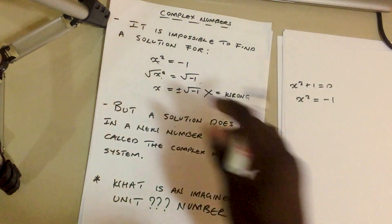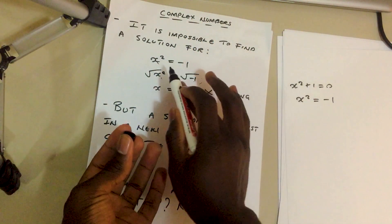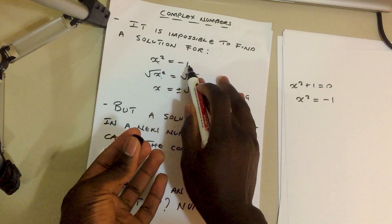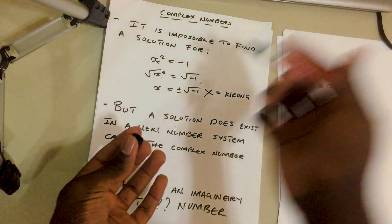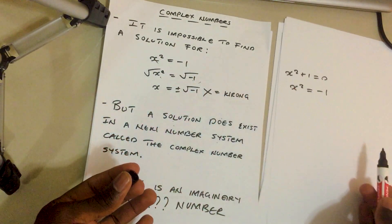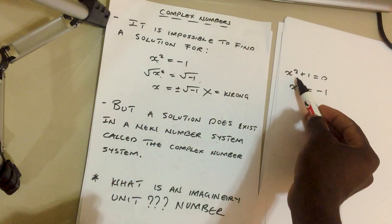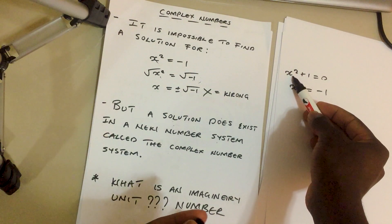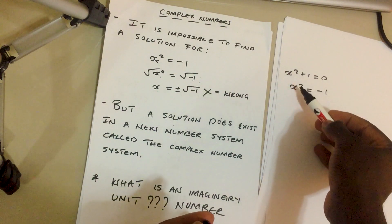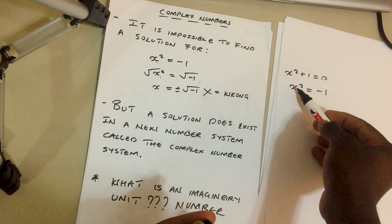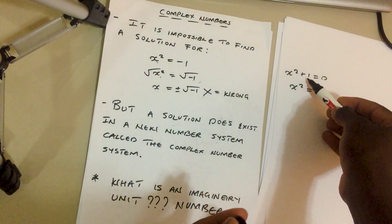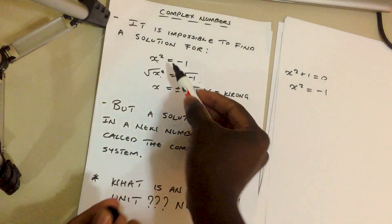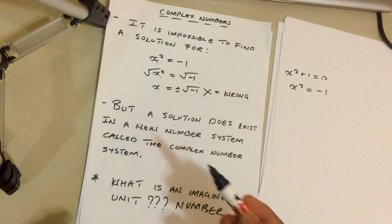We know that it is impossible to find a solution for a quadratic function such as x squared equals negative one. For those of you wondering how we got to this point, this right here is the original quadratic function. In order to find the value of x, we need to make x squared the subject of the formula by taking one to the other side, making it negative one, hence this stage that we are on right now.